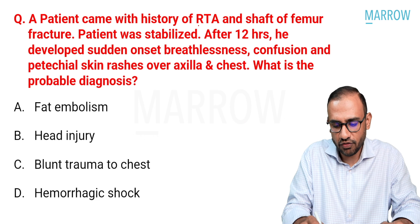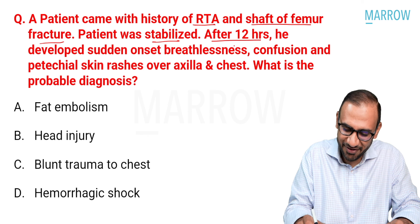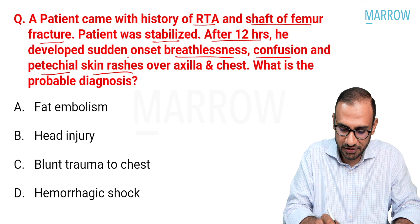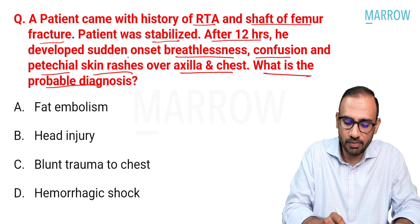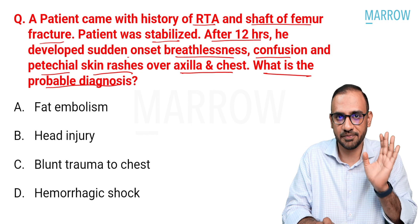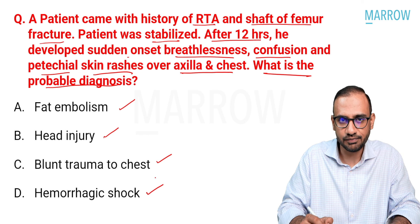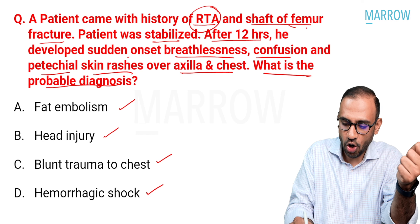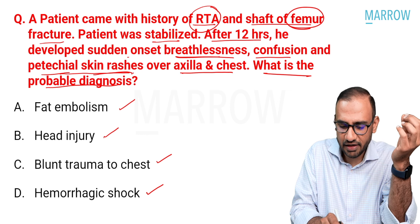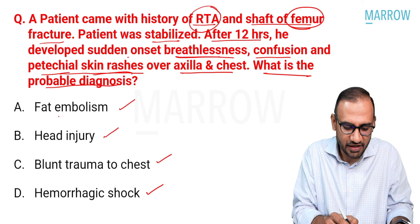Next question: a patient sustained a pelvic fracture in a road traffic accident and is bleeding and in shock. After 12 hours, he developed sudden onset breathlessness, confusion, and petechial skin rashes over the axilla and chest. The probable diagnosis is fat embolism syndrome. The key words here are: polytrauma patient, long bone fracture, breathlessness, confusion, and petechial rashes over the axilla and chest.